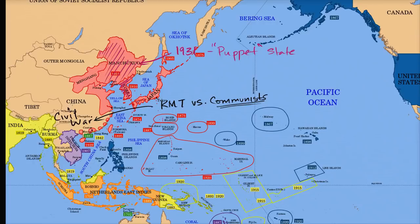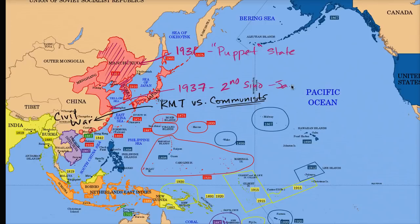Imperial Japan is taking advantage of this to take more and more control over parts of China through the 1930s, until we get to 1937. In 1937 the Japanese used some pretexts — a false flag, the Marco Polo Bridge incident — as justification to launch all-out war with China. This is often referred to as the Second Sino-Japanese War. Many historians consider this the beginning of World War II, or at least the beginning of the Asian theater.